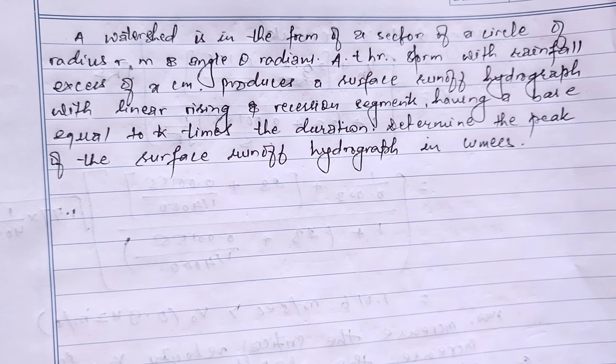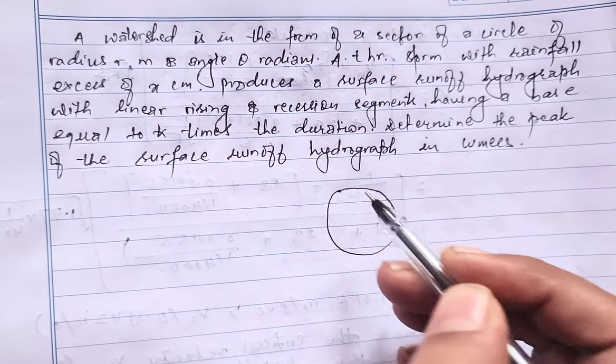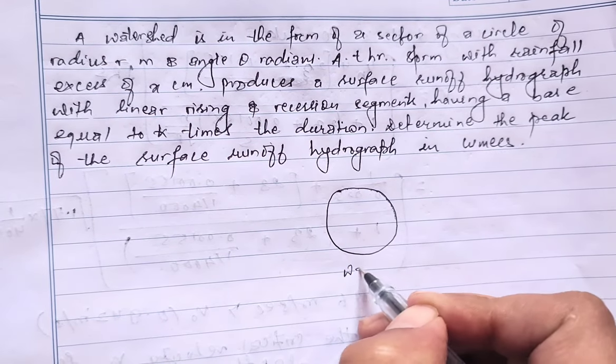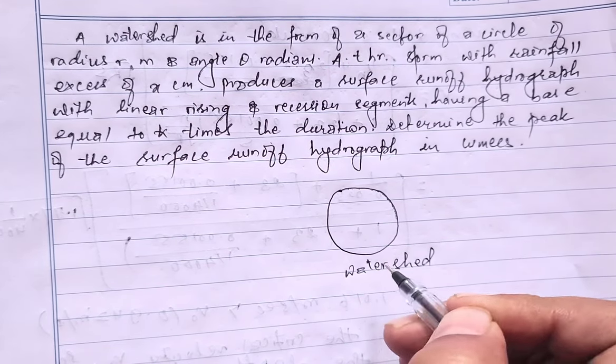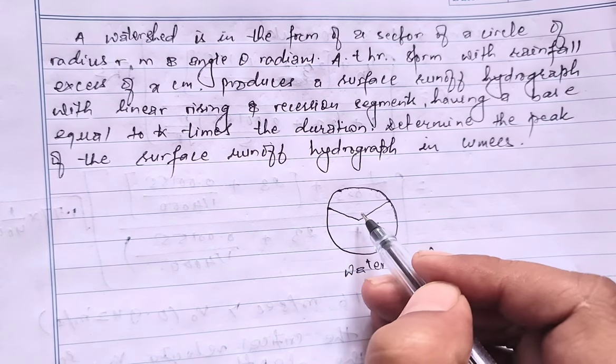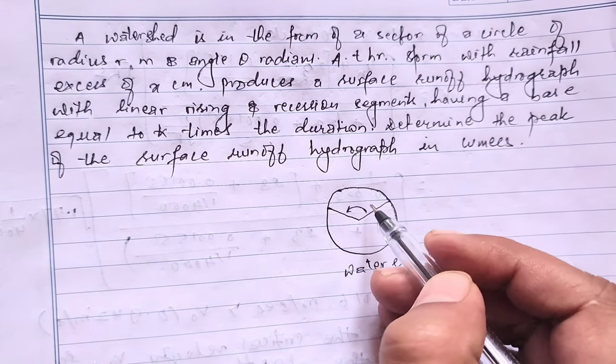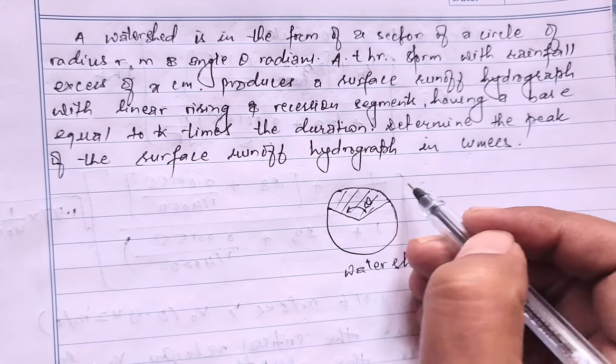As per the given question, first we'll draw the watershed. The catchment will form this way - this is a circular watershed. The catchment will be formed in this way. This angle is theta, and this area is the catchment area of watershed.